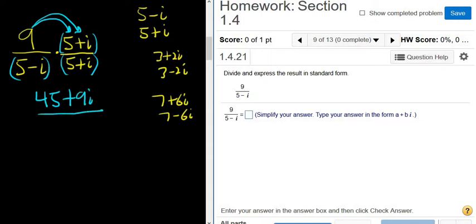In the denominator, we use our super powerful formula. If you remember, if you have a minus bi times a plus bi, that's the same thing as a squared plus b squared. The i's go away. They vanish.